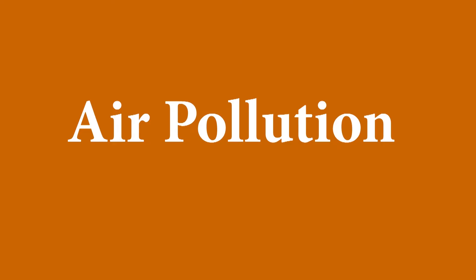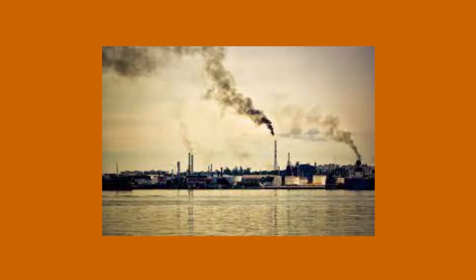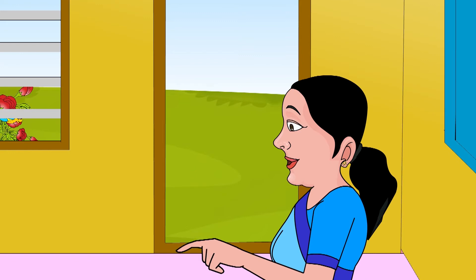Air pollution. Air is being polluted every day due to our various activities. Some of them are: bursting of firecrackers on festivals, and smoke given out by factories and vehicles. Air pollution causes diseases like asthma, allergies, and coughs. Polluted air is bad for plants and animals too.